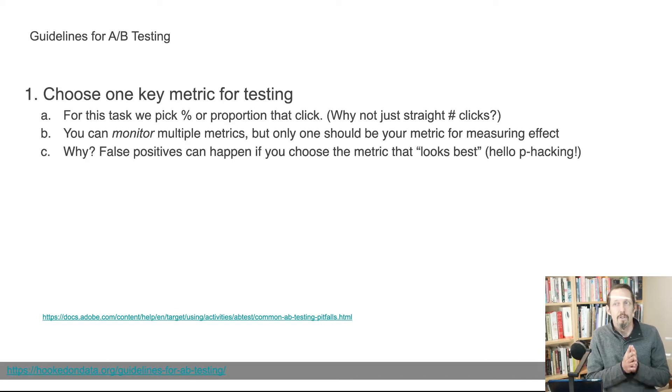So one of the ways in which we deal with confounds, potential confounds, is we try to control for them. And one of the ways we can control from them is to normalize a measurement so that we can remove the possibility of that confound mattering. By measuring percent clicks, we don't care how many raw clicks there were. We just care about the proportion. Now, notice that this slide says choose one key metric for testing, just one, and we're going to do a proportion of that click the button.